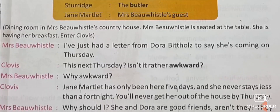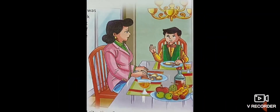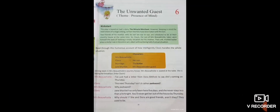The scenario: a dining room in Mrs. Bewissel's country house. Mrs. Bewissel is seated at the table and having her breakfast. Enter Clovis. You can see in the picture she was having breakfast — that is Mrs. Bewissel — and that boy is Clovis.